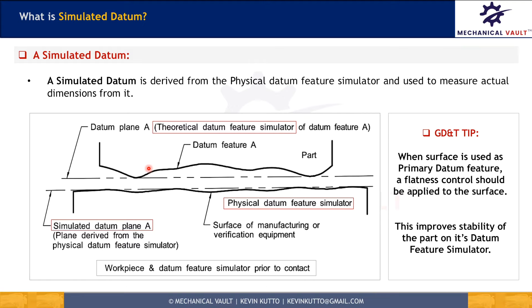A simulated datum is derived from the physical datum feature simulator and used to measure actual dimensions. If we look at a cross-section of the part and the surface plate, the actually produced part has surface irregularities — it is not perfect. In the engineering drawing, the bottom face is primary datum A, which is theoretical and touches the top three high points of the surface variations. It is not possible to check all three points on the actual part to establish datum plane A directly, which is why it remains theoretical.